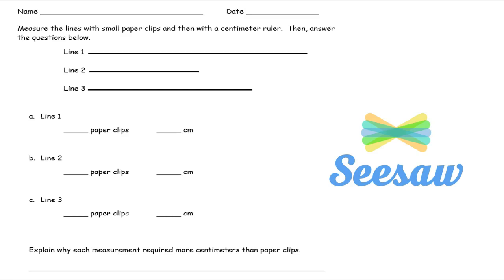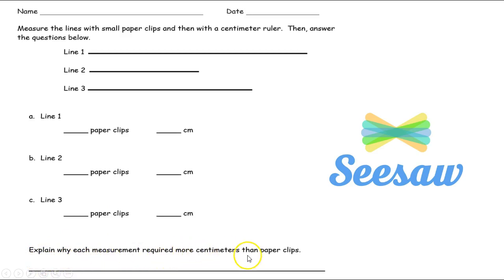Alright, here is the exit ticket for today. You're going to measure the lines with small paper clips and then with a centimeter ruler, and then answer the questions. Measure line 1 first with paper clips, write down how many, then use your centimeter ruler and write that measurement too. Do the same with lines 2 and 3. Then at the very bottom, explain why each measurement required more centimeters than paper clips. When you're done, take a picture of your answers and SeeSaw it to your teacher. Good luck!